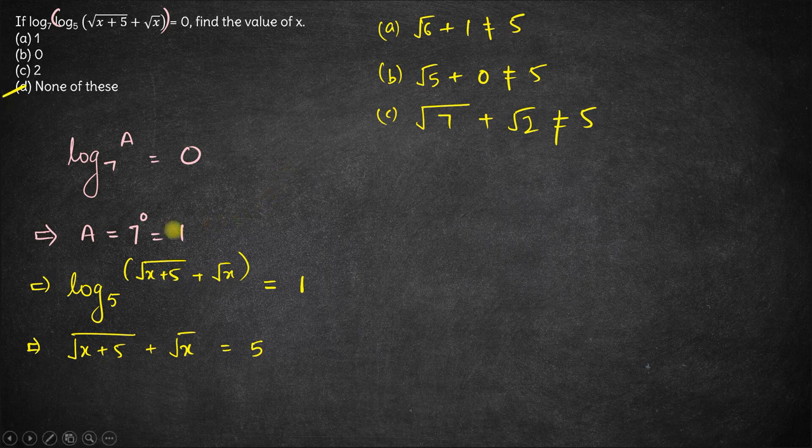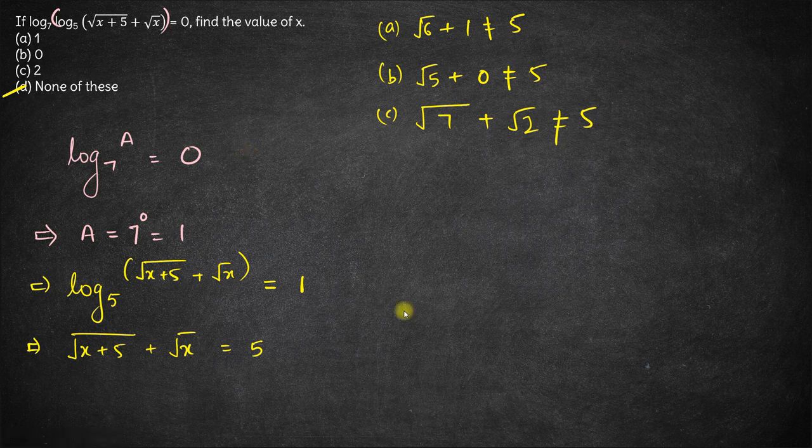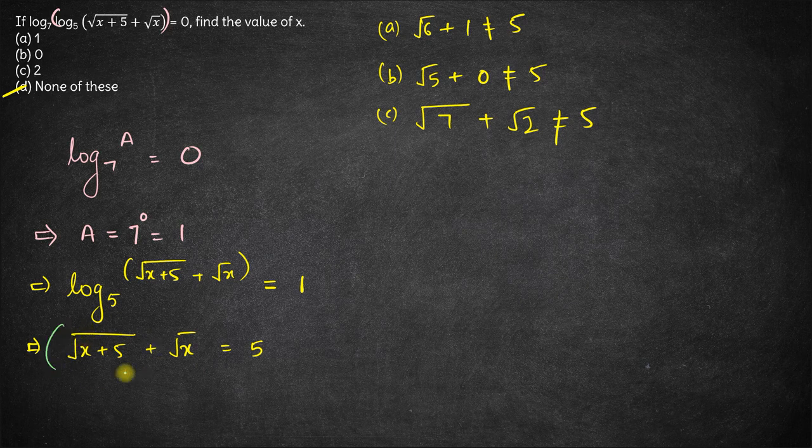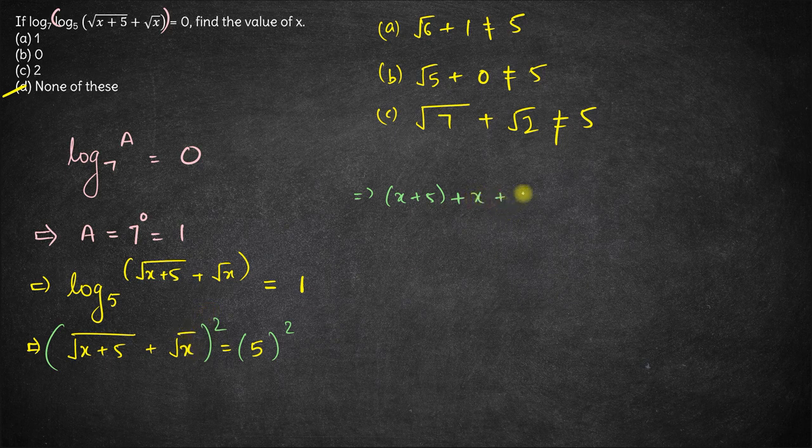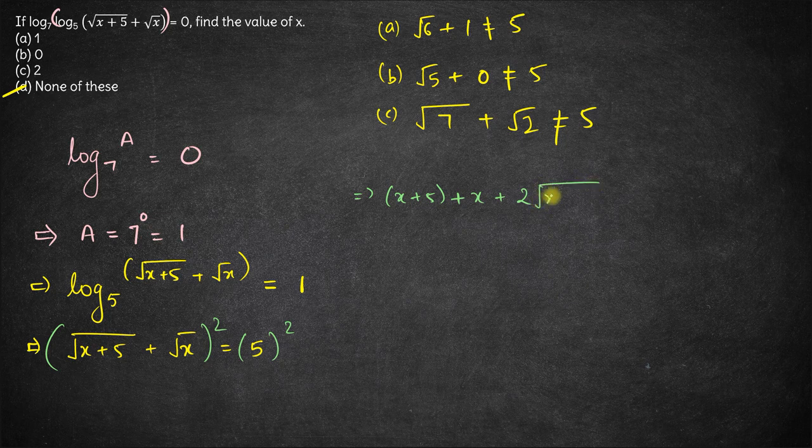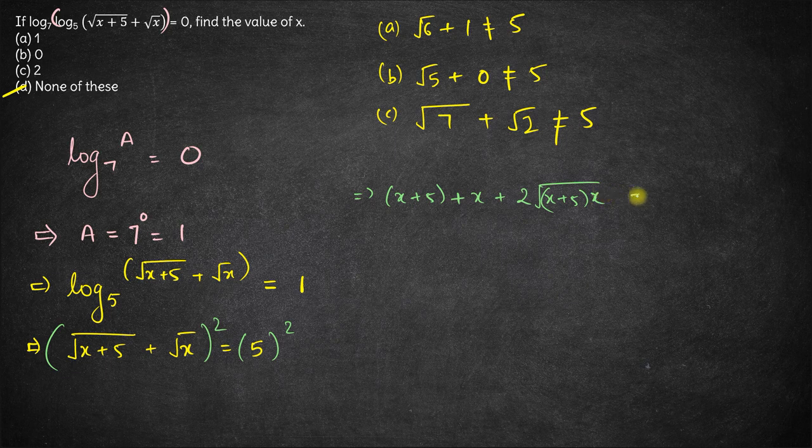Now if you want to figure out what is the actual value of x, let's see. For that we'll have to take square of this equation. So squaring both sides, we'll get this is a plus b whole square. So a square which is x plus 5 plus b square which is x, plus twice of a into b, which is square root of x plus 5 into square root of x, which is square root of x plus 5 to x, which equals 25.